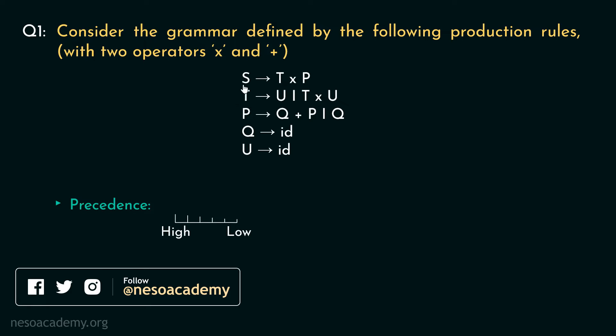Since from the start symbol S itself, we can derive the operator into, so clearly it cannot have the highest precedence order. S can be rewritten as T into P and then P can be rewritten as Q plus P. Basically, the addition operator can only be derived in the lower levels than the multiplication operator. So, the operator with the highest precedence is naturally the plus. And the one with the lowest precedence order is the multiplication operator.